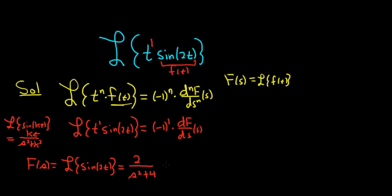All right, we have to differentiate this thing. So what we can do is we can bring this upstairs. This is 2 parentheses s squared plus 4 to the negative 1. All right, now we'll take the derivative. So F prime of s.